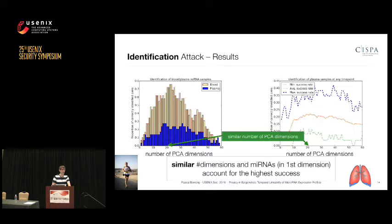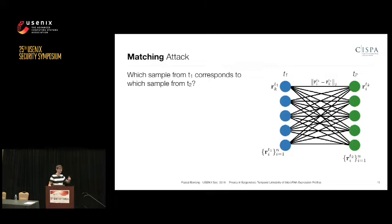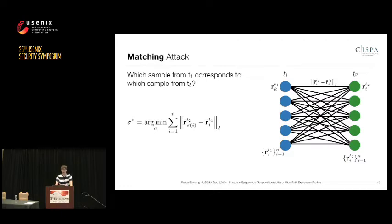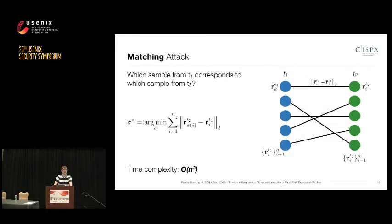Let's move on to the second attack — the matching attack. Here we have two databases and we want to find an assignment that minimizes the sum of Euclidean distances. Representing this as a bipartite graph, we can apply a graph algorithm that runs in O(n³) to get an assignment. This is formalized as minimizing the sum of pairwise Euclidean distances across the two databases.